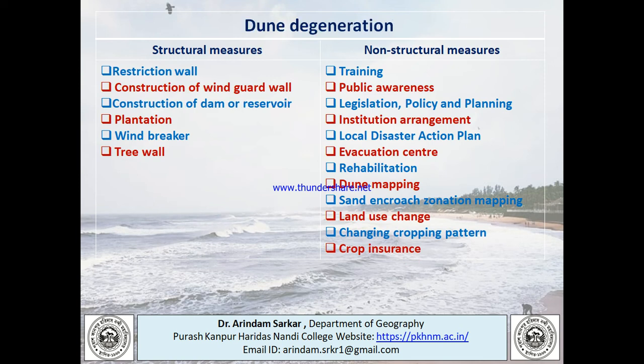Now dune degeneration. Structural measures needed to protect against dune degeneration include constructing a restriction wall, wind guard wall, dam or reservoir, plantation, windbreakers, and tree walls. Non-structural measures include training, public awareness, legislation, policy planning, institutional arrangement, local disaster action plan, evacuation center, rehabilitation, dune mapping, sand encroachment zonation mapping, land use change, changing cropping pattern, and crop insurance.